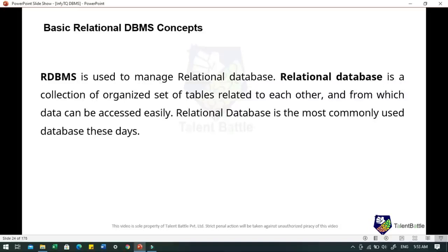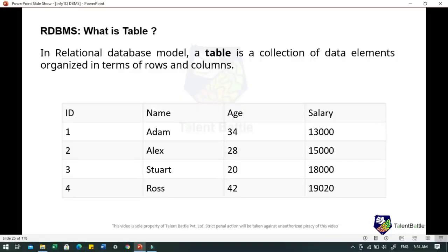When we talk about basic relational DBMS concepts: DBMS is used to manage relational databases. A relational database is a collection of organized tables related to each other from which data can be easily accessed. It is the most commonly used database today. In the RDBMS model, a table is a collection of data elements organized in terms of rows and columns. A table is considered a convenient representation of relations, but a table can have duplicate rows while a true relation cannot. For example, here is a table with columns id, name, age and salary with certain records.